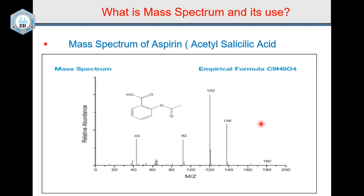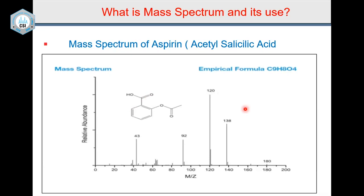These are called fragment ions. Once in the mass spectrometer, the molecular ion at 180 fragments into different ions: 138, 120, 92, 43, etc. A mass spectrum containing all these ions is called the mass spectrum of the molecule — it is like a fingerprint. Everybody has their own fingerprint; every compound has its own fingerprint. When you take aspirin's mass spectrum anywhere in the world, under the same conditions, you will find the mass spectrum of salicylic acid remains the same.